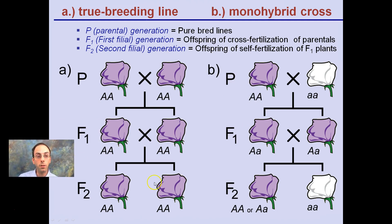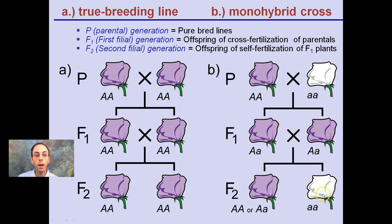In the non-true breeding example, the offspring may initially look the same, but in the F2 generation you're seeing that there's a white flower appearing. That white flower is there because it's heterozygous. Our F2 generation is where we notice purple and also white flowers being produced. The F1 is the first generation and F2 is the second generation, and this results from a heterozygous genotype even though the phenotype is the same.